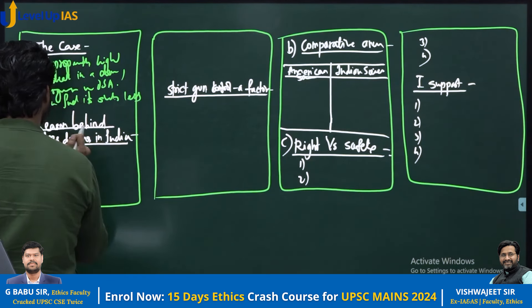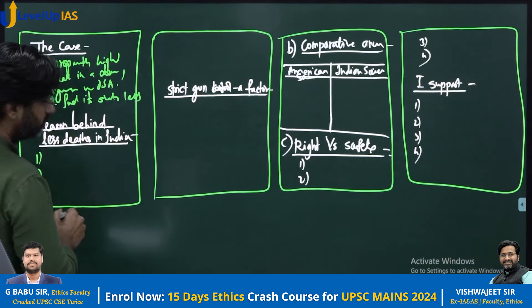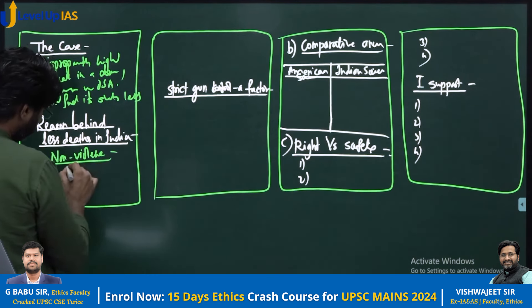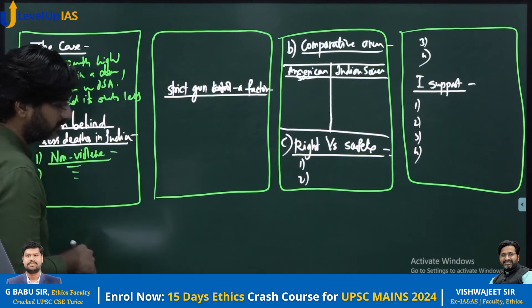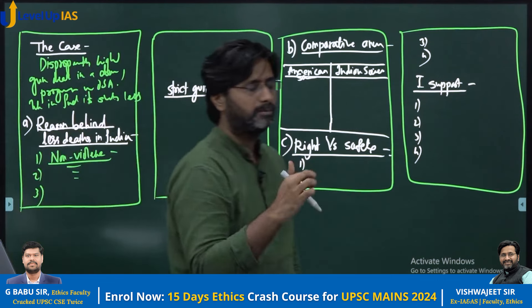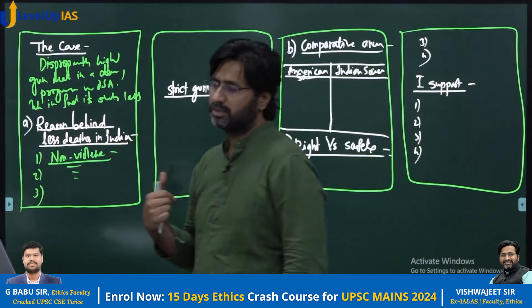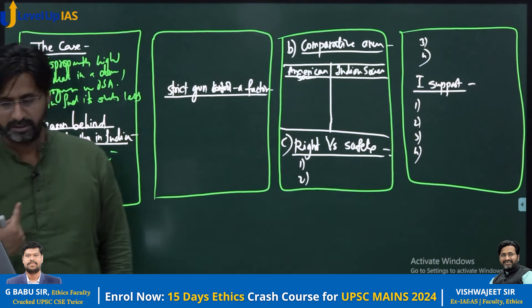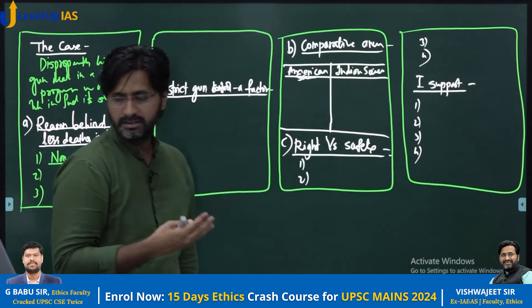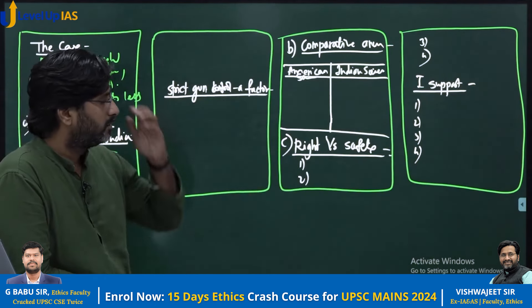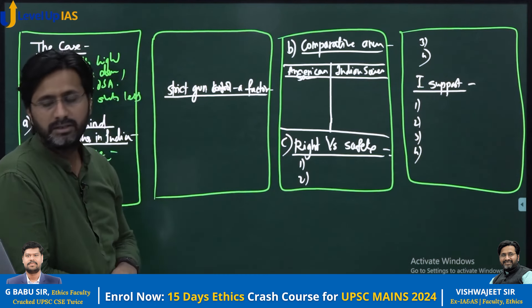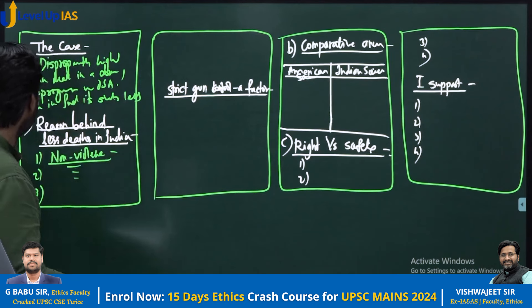Don't write gun control as the first point. You write the issue of non-violence first. Write 'non-violence' underlined and then talk about three to four points under that: talk about Buddha and Mahavira (Vardaman), then talk about Gandhi, India's independence movement, and India's overall cultural heritage. Even in rural areas, even in utmost poverty, people are still living in some kind of harmony and system.